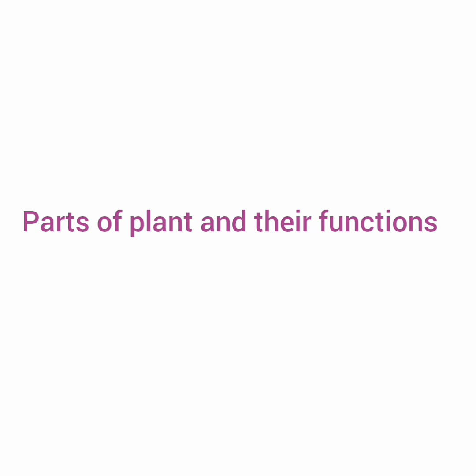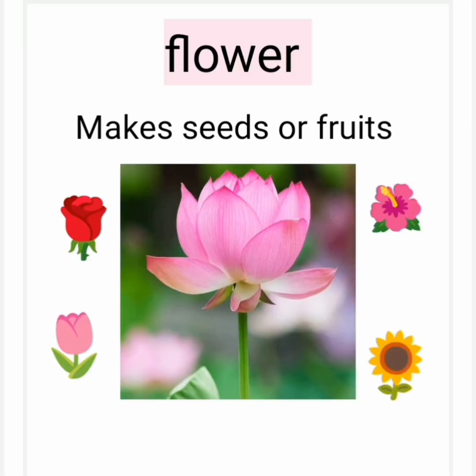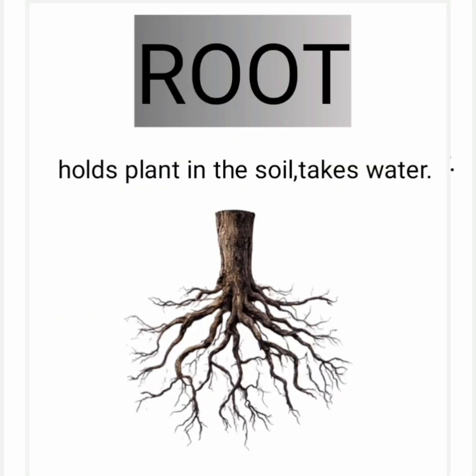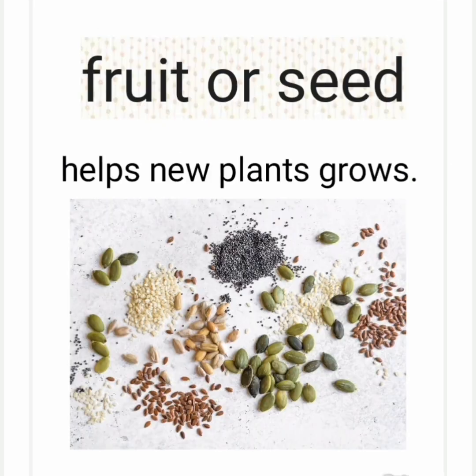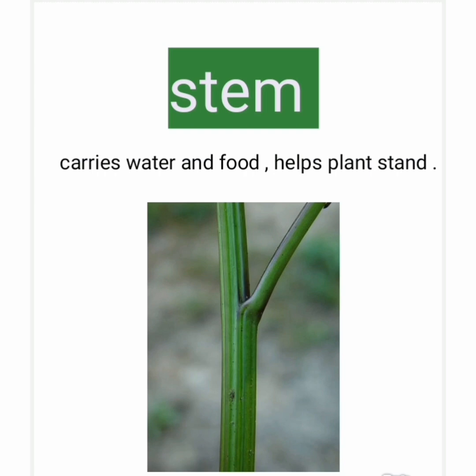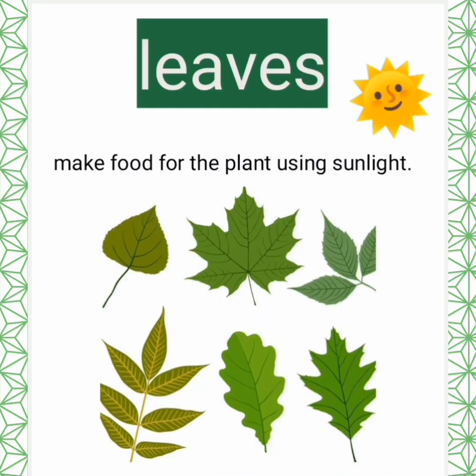Parts of plants and their functions. Flower — the flower makes seeds or fruits. Roots — hold the plant in the soil and take in water. Fruit or seed — helps new plants grow. Stem — carries water and food, helps plants stand. Leaves — make food for the plant using sunlight.